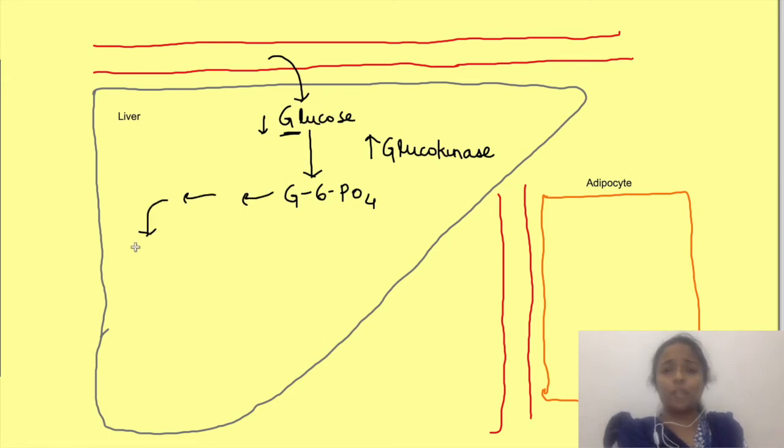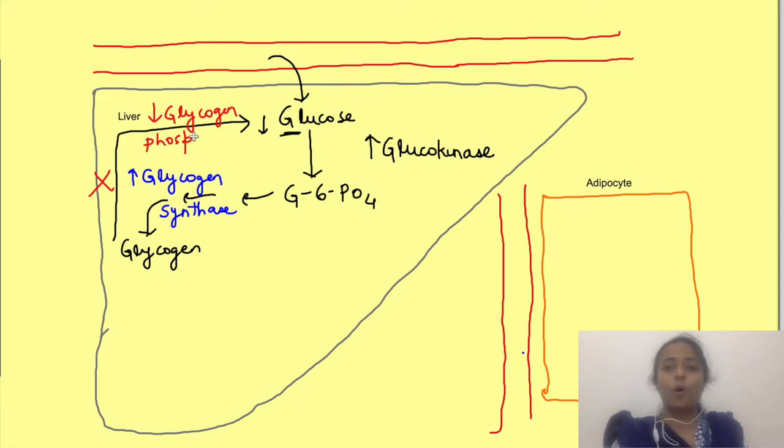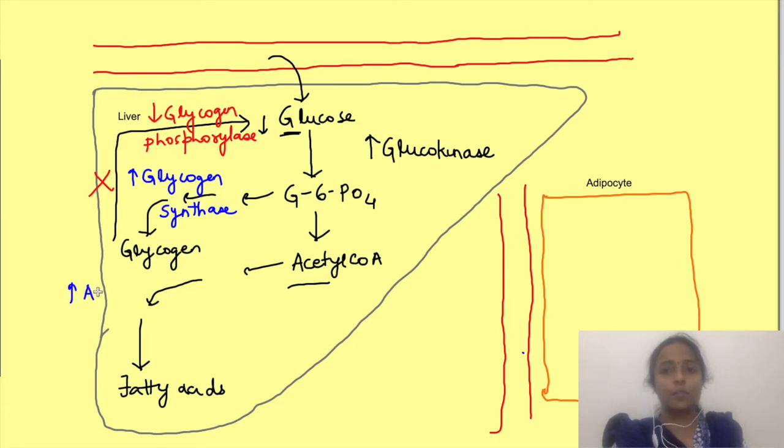Then it promotes glycogenesis by increasing the activity of the enzyme glycogen synthase while it inhibits glycogenolysis by inhibiting glycogen phosphorylase. Also, excess glucose which has not been converted into glycogen enters into glycolysis pathway and produces acetyl coenzyme A in liver. Now this acetyl coenzyme A is used for synthesis of fatty acids since insulin promotes the activity of the enzyme acetyl CoA carboxylase which is very important enzyme in lipogenesis, and hence insulin promotes fatty acid synthesis.